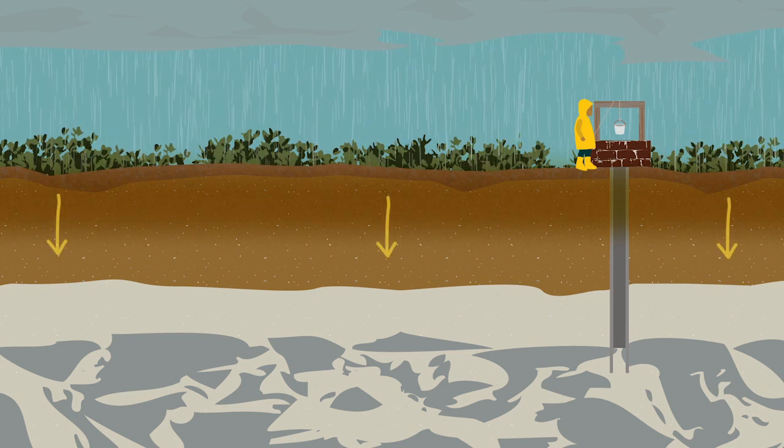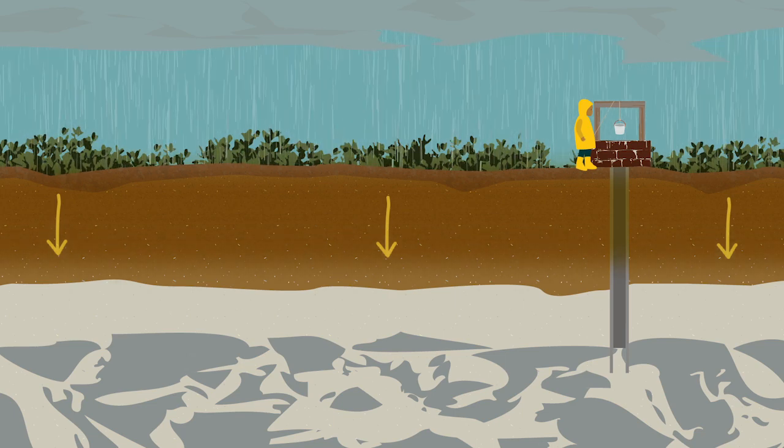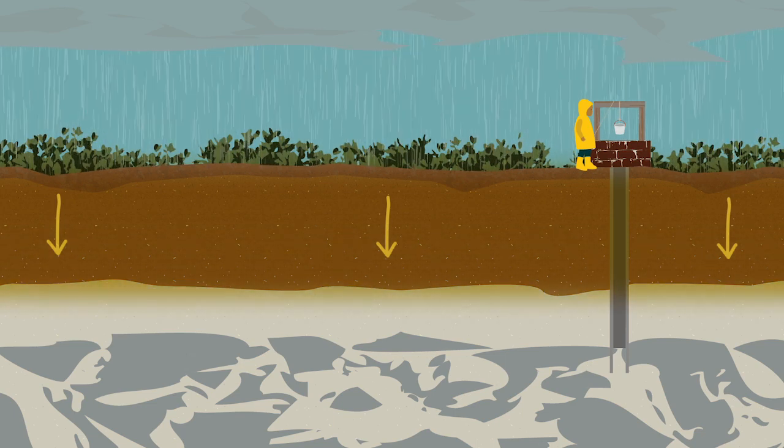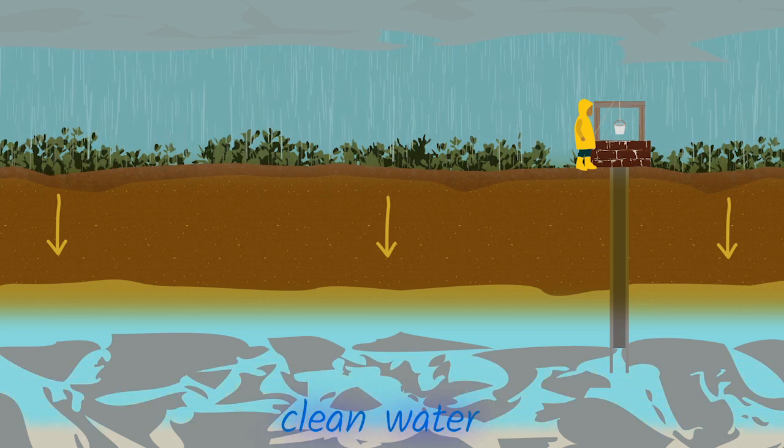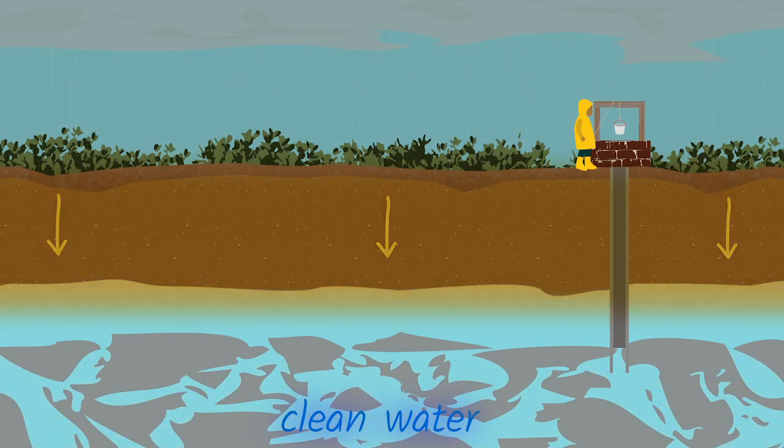When the rain lands on the ground, it seeps through the earth. Different layers of earth have different sized sediments. As the water seeps through the earth it is cleaned. This makes the water clean and drinkable for humans and animals.